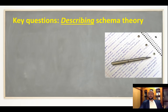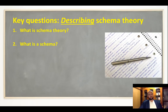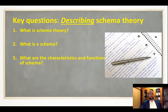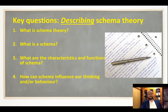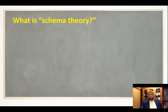When describing schema theory, there are four key questions we have to understand: first, what is schema theory and what is it trying to explain? Second, what is a schema — the definition is really important. Third, what are the characteristics and functions of a schema? And fourth, how can schemas influence our thinking and behavior?